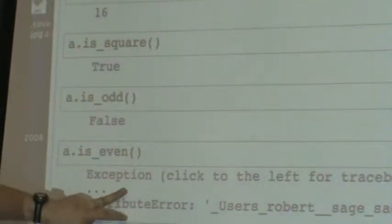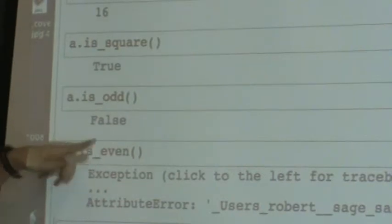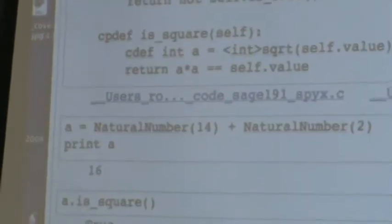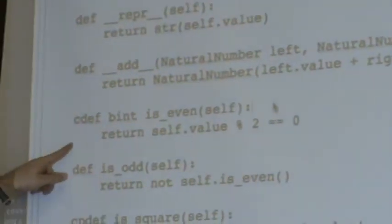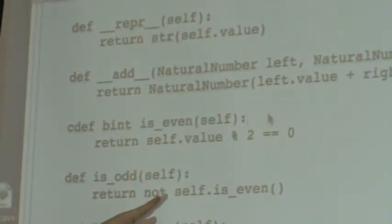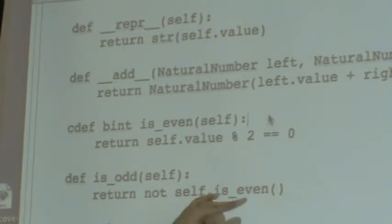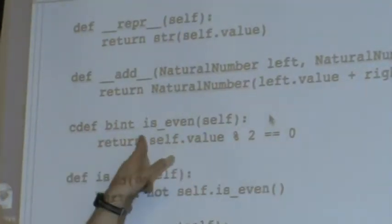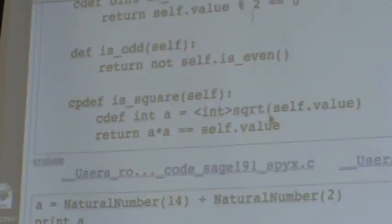So let's try out some of these methods. Is_square is false. That's because 29 is not a square. Now I want to know if something's odd. Well, sixteen, which is our number, is not odd. Now I want to know if it's even. And here we see this is the drawback of CDEF methods. From Python, I can't call this function because I declared it as a CDEF method. Now notice that from Cython I can call this function. So right here, self.is_even works because I'm in Cython.